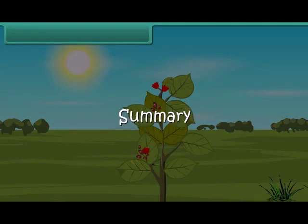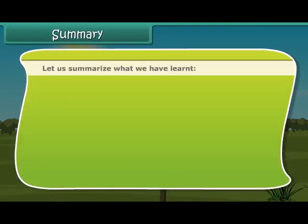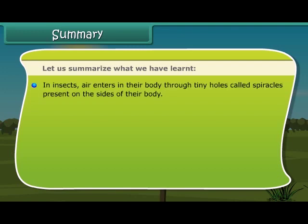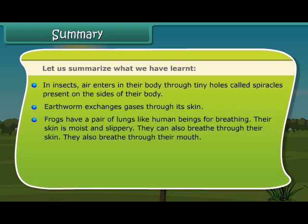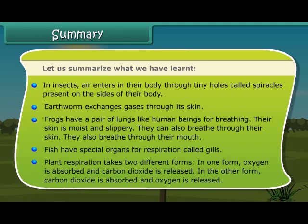Summary: In insects, air enters their body through tiny holes called spiracles present on the sides of their body. Earthworms exchange gas through their skin. Frogs have a pair of lungs like human beings for breathing; their skin is moist and slippery, and they can also breathe through their skin and through their mouth. Fish have special organs for respiration called gills. Plant respiration takes two different forms: in one form, oxygen is absorbed and carbon dioxide is released; in the other form, carbon dioxide is absorbed and oxygen is released.